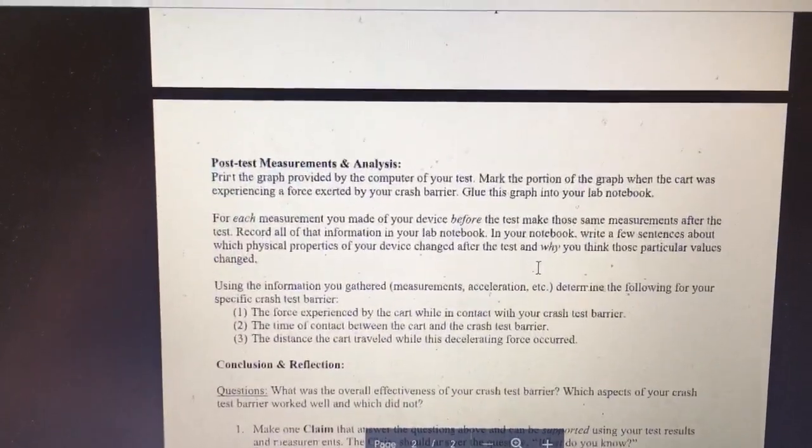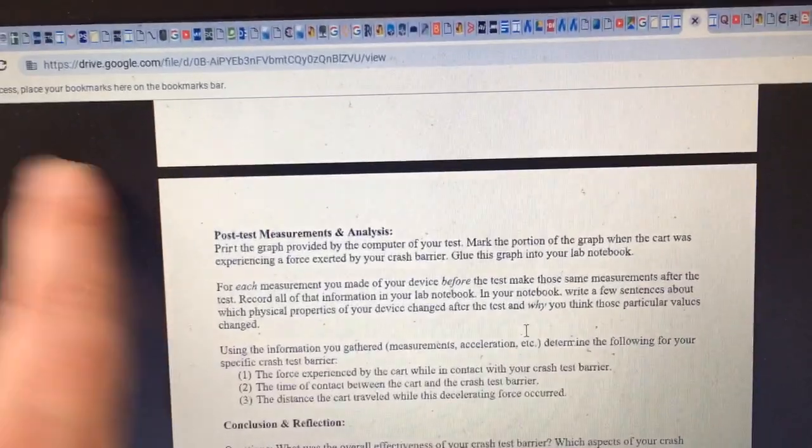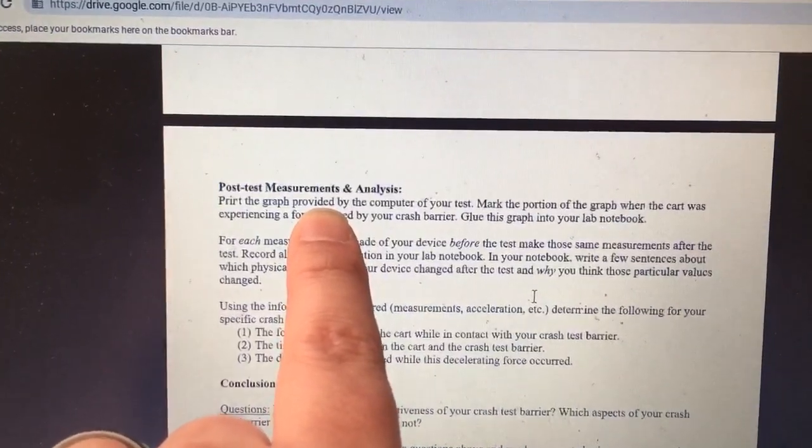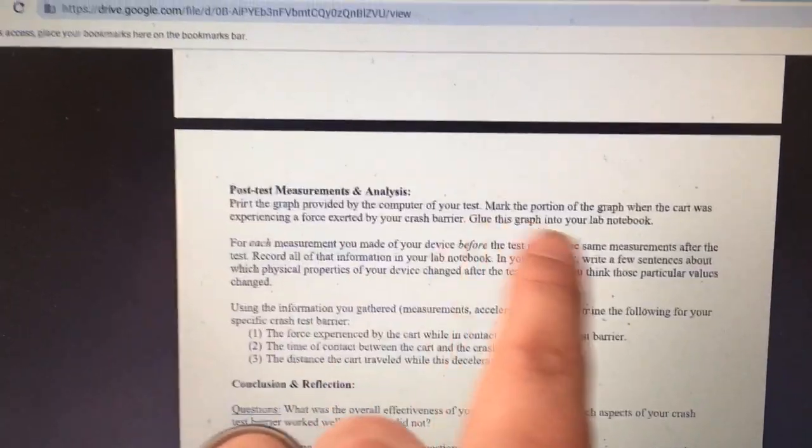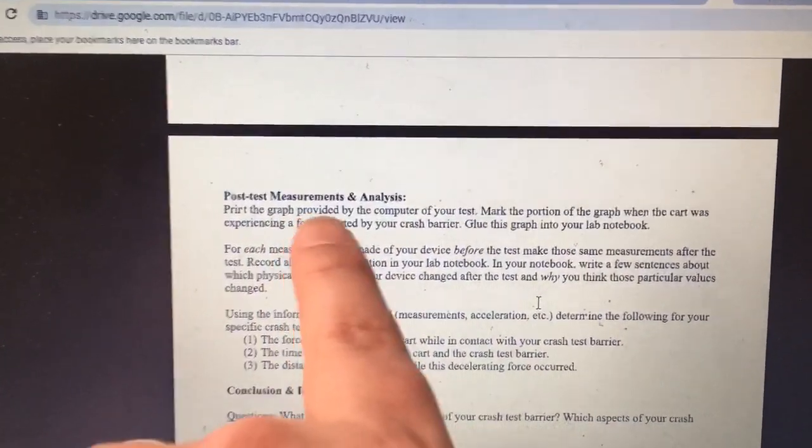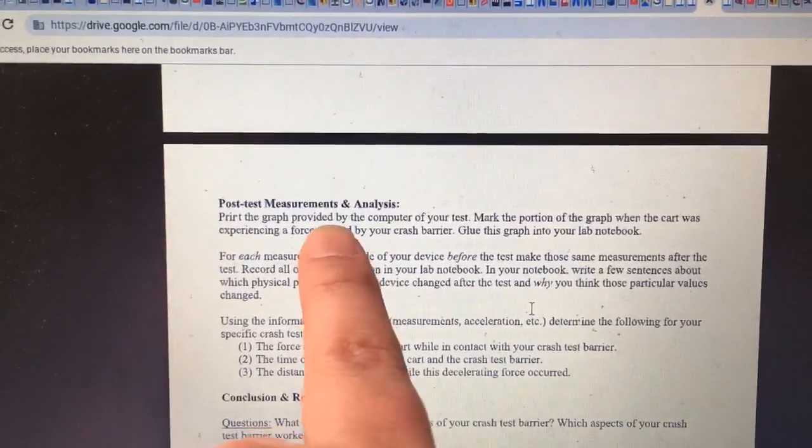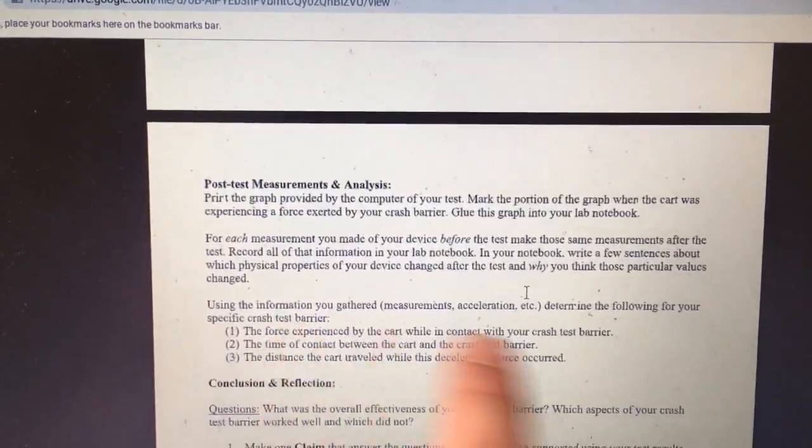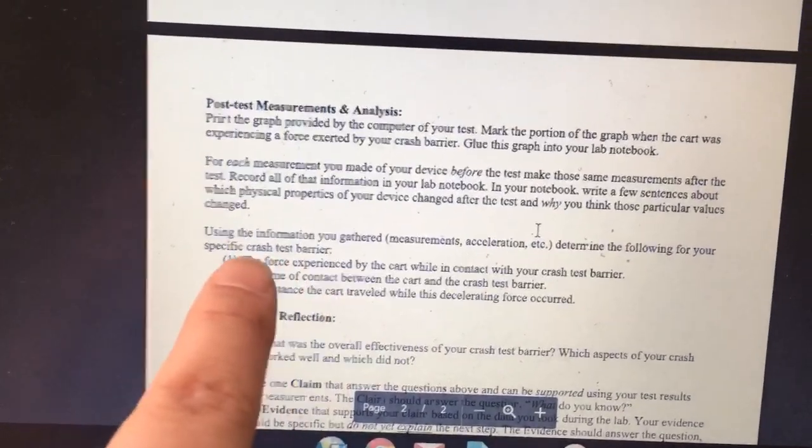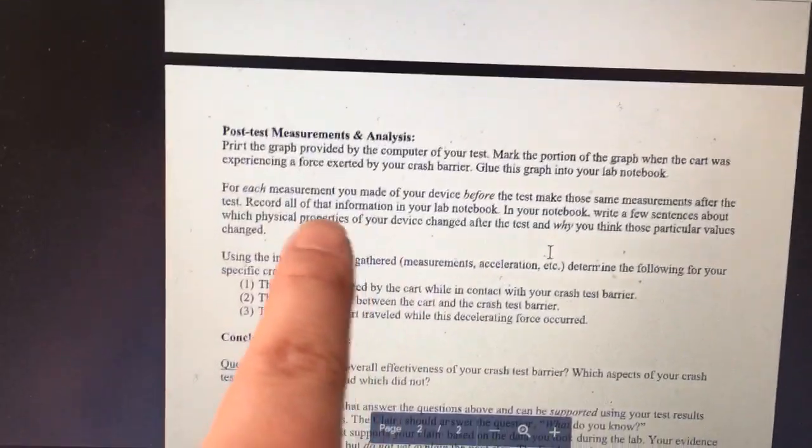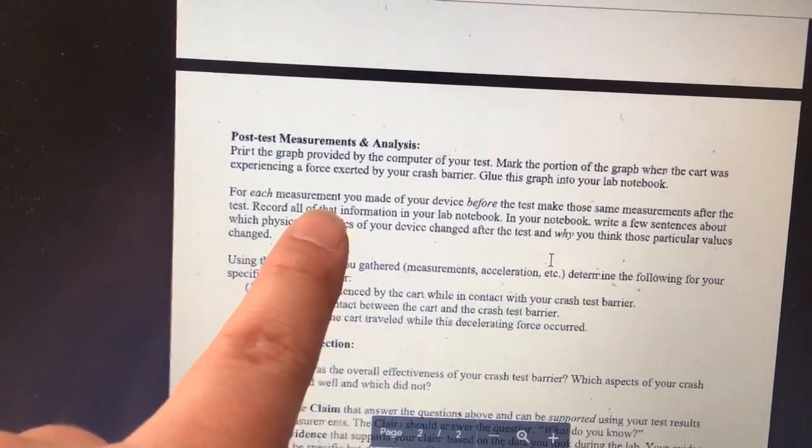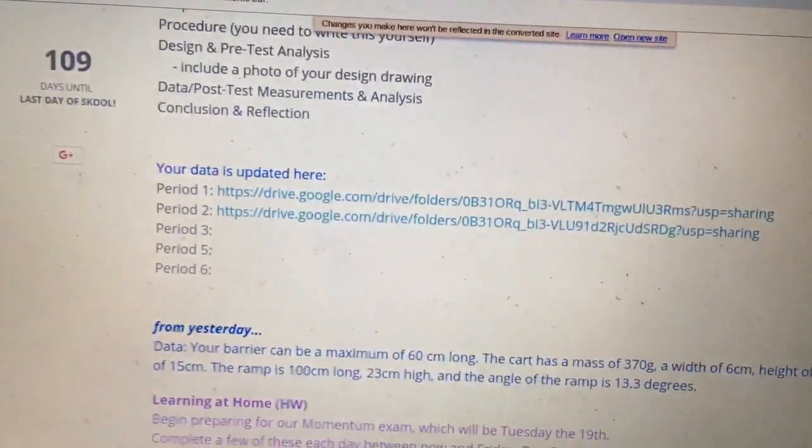So after you take a look at your data, you can take a screenshot or a screen grab of your data. And you can mark on there where the graph experienced the most force. And then you can add that to your post measurement section. What else goes in here? You have to figure out these three things. Before you get there, you have to compare the measurements that you took for the data table. And here's the data table.